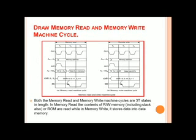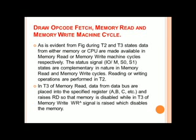For memory read and memory write machine cycles, they generally take 3 T-states. Looking at the block diagram, you can understand that between T2 and T3, the read as well as write operation is performed. Please read the presentation carefully for more detail — it will help you understand everything.